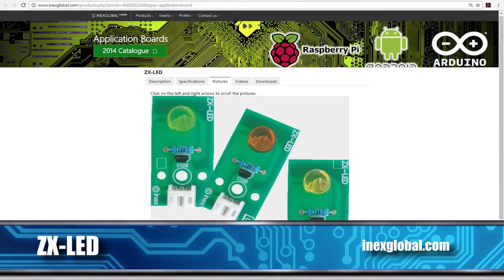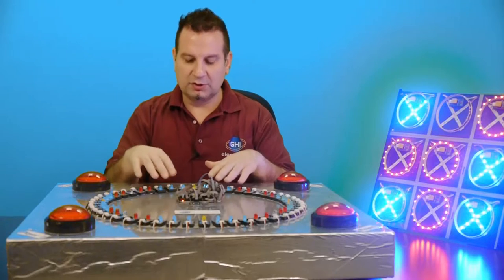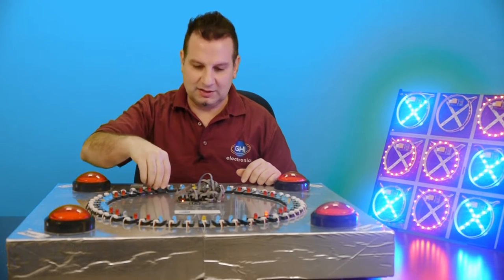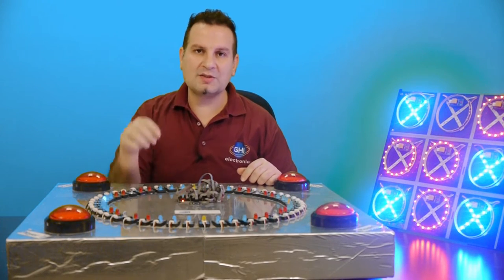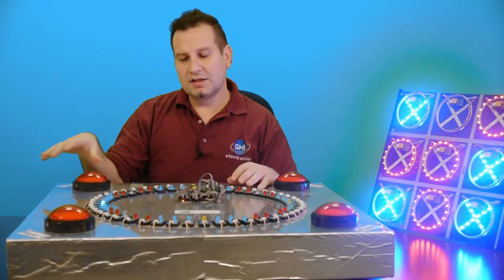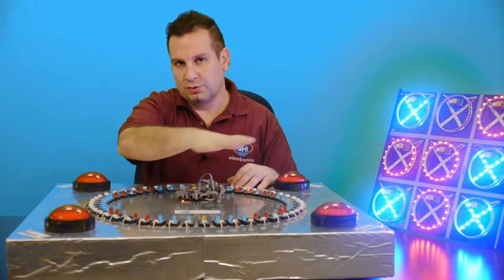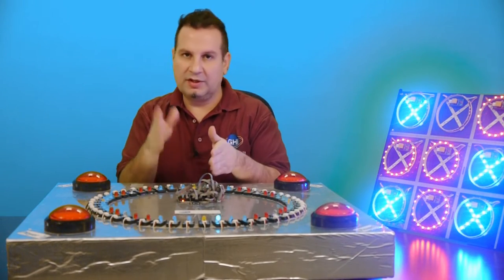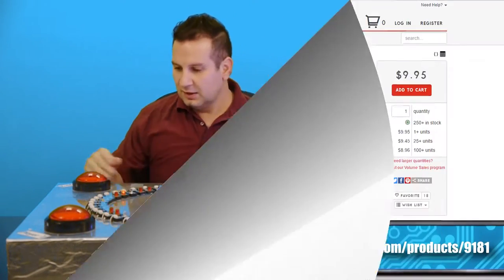The LEDs, these modules, already have transistors on them so we don't have to worry about controlling this giant big LED through the processor. The processor is only controlling the transistor that exists on each individual LED and there's a separate power source to control the LED. So all the processor is doing is saying on or off.